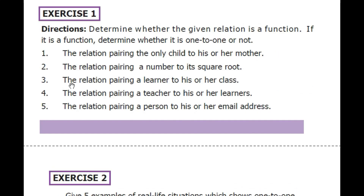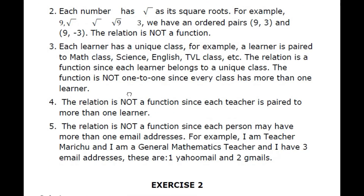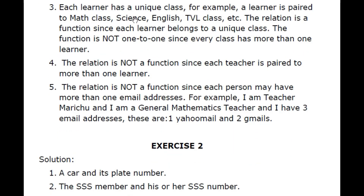Number 3: The relation pairing a learner to his or her class. Each learner has a unique class — for example, a learner is paired to a math class, science class, English, and so on. The relation is a function since each learner belongs to a unique class. However, the function is not one-to-one, since every class has more than one learner. This is a many-to-one relation and it is a function, but not a one-to-one function.